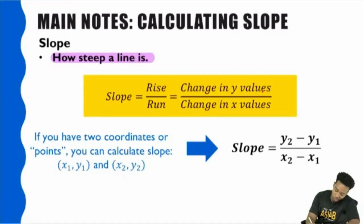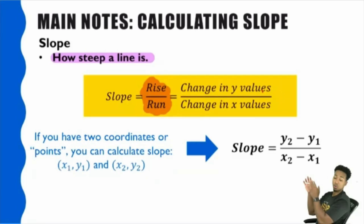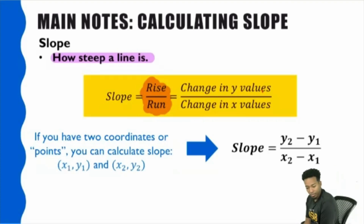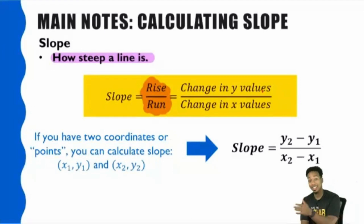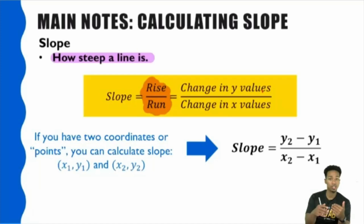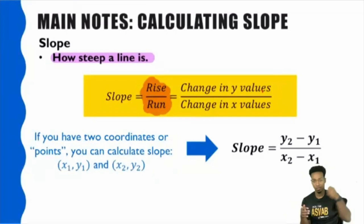Has anybody ever heard slope described with rise over run? Now does anybody know what that actually means? I see a lot more no's than yes's — before it was a lot of yes's. This is exactly what I was saying earlier: if you memorize it without truly understanding it or practicing it, you tend to forget it very quickly.